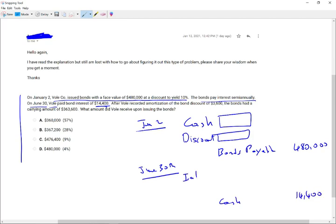Well, if I paid interest, I'm going to have to debit interest expense. I don't know. I'm not told interest expense, but I'm told after Vol recorded amortization of the bond discount of $3,600, the bond has a carrying amount of $363,600. So I'm told here that I amortized $3,600. So I credited the discount $3,600. Well, now I know my interest expense is those two together, which is the amount of cash I paid plus the amount I'm amortizing as a discount.